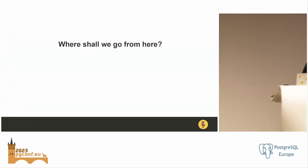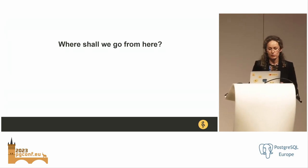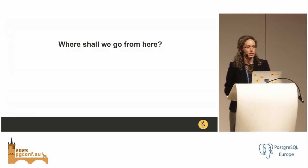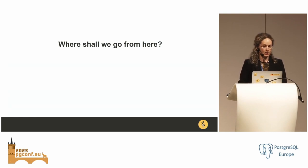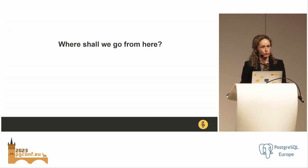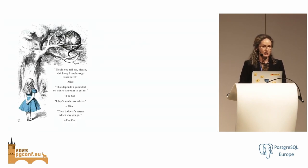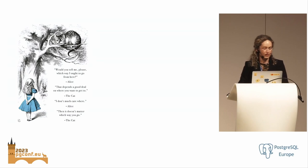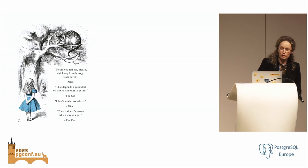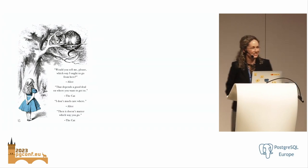So where shall we go from here? When putting these slides together, I was thinking about all the different aspects of the community, different activities, and ways people could contribute — and also where newcomers can find information. It reminded me of the scene from Alice in Wonderland where Alice asks the Cheshire Cat where she ought to go, and he says it depends a good deal on where you want to get to. I hope this presentation will give you an idea of where you can go, and then you can decide whether you want to go there.